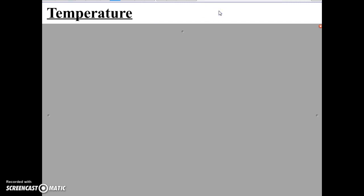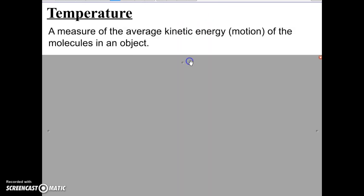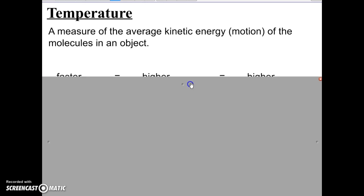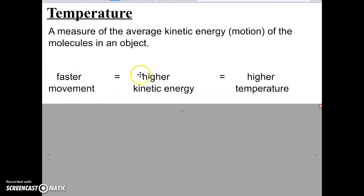Let's start with temperature. You've all measured temperature and you all have a temperature. When we get sick our temperature goes up. Temperature really is just a measurement of the average kinetic energy, or the amount of movement, of the molecules in an object. When you're sick your white blood cells are moving faster because they are fighting off the bacteria or virus making you sick. The faster the molecules are moving, the higher the kinetic energy, and therefore the higher the temperature of the object.